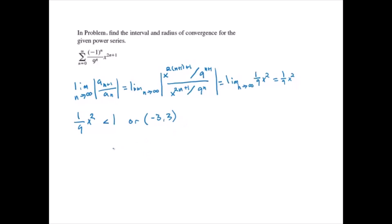At x equals negative 3, the series from k equals 0 to infinity of negative 1 to the k times negative 3 diverges by using the nth term test.